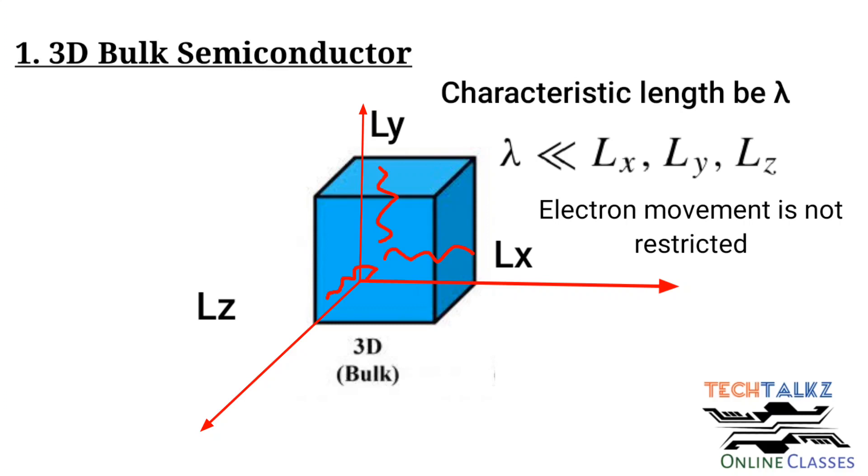That is the normal case. All the dimensions across x, y and z axis are greater than 100 nanometer or greater than the basic characteristic length.